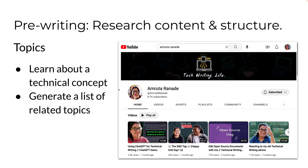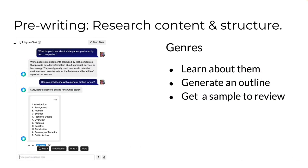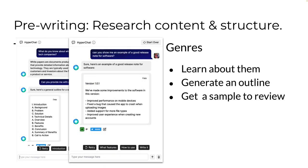You could also ask AI to help you create an outline for a genre of text you're going to write. HyperAI didn't have an existing template for a white paper, but it did create an outline in HyperChat. Or if you need to write release notes for the first time and you're not sure what they're supposed to look like, you could ask HyperChat to show you an example — and this is what it gave me.